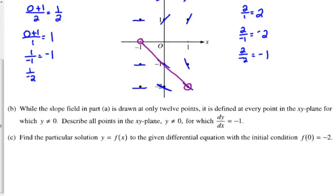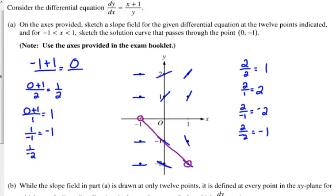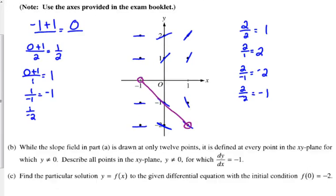Part B: while the slope field in part A is drawn at only 12 points, it is defined at every point in the XY plane for which Y does not equal 0. Describe all points in the XY plane, Y not equal to 0, for which the derivative equals negative 1. Under what conditions did the derivative equal negative 1?